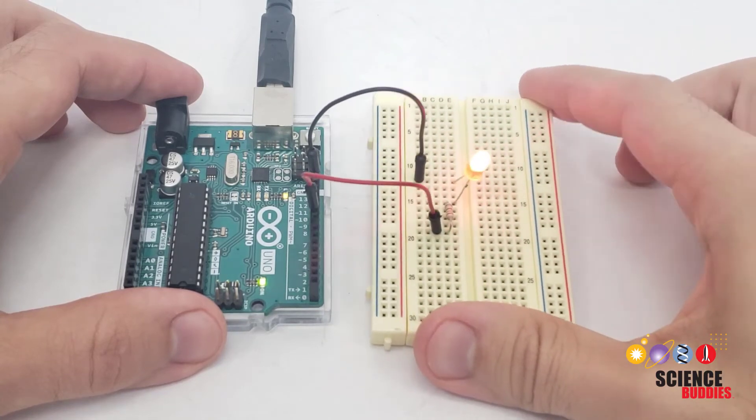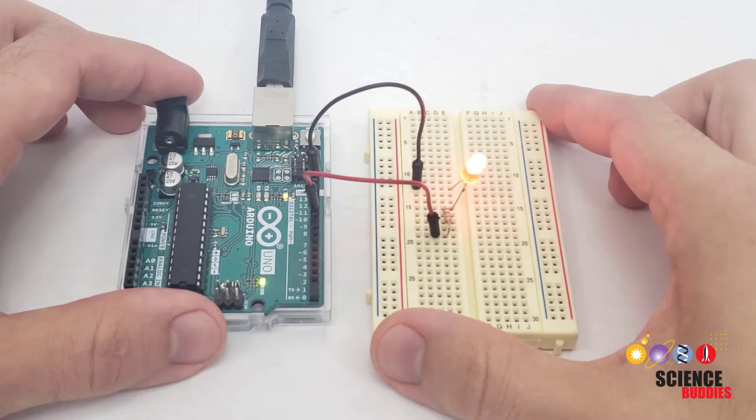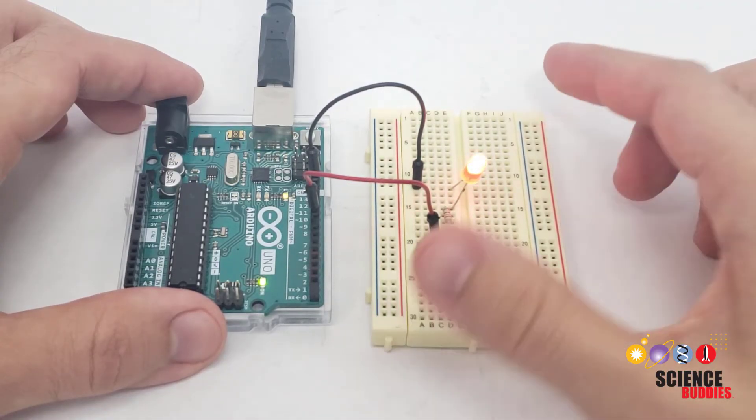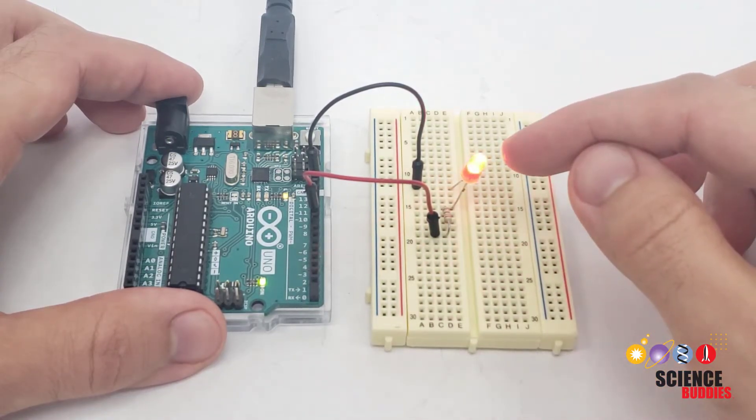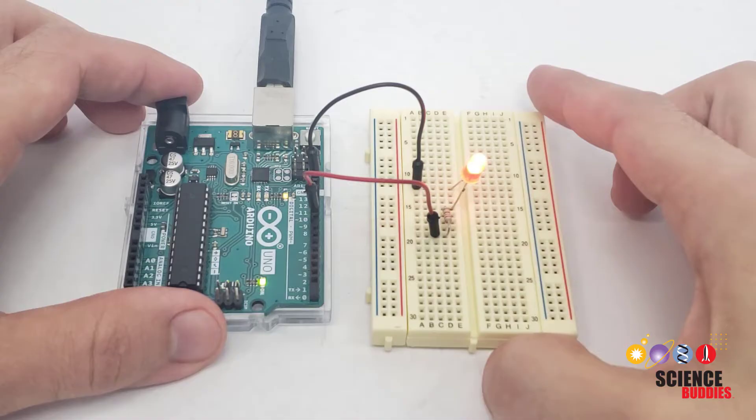In this video you will learn to control the brightness of an LED using the Arduino's analog write function. This will allow you to gradually fade the LED on and off instead of just blinking it fully on and off using the digital write function like you've done before.